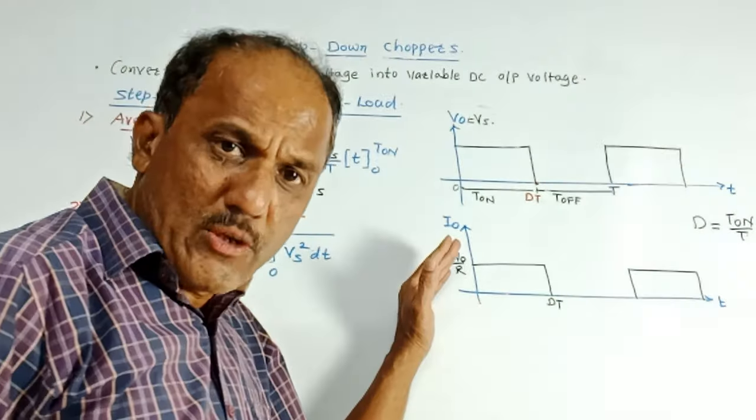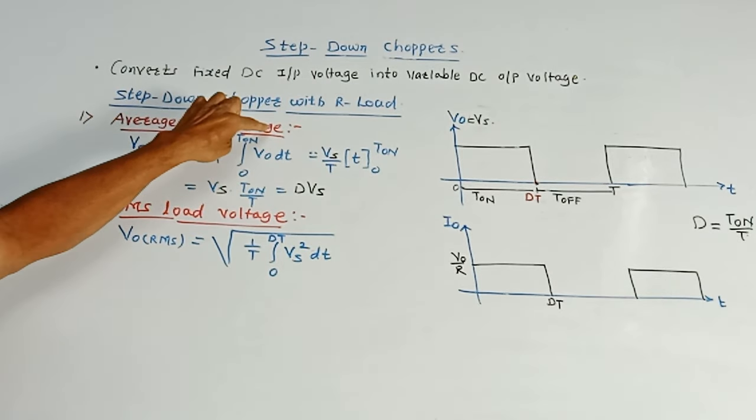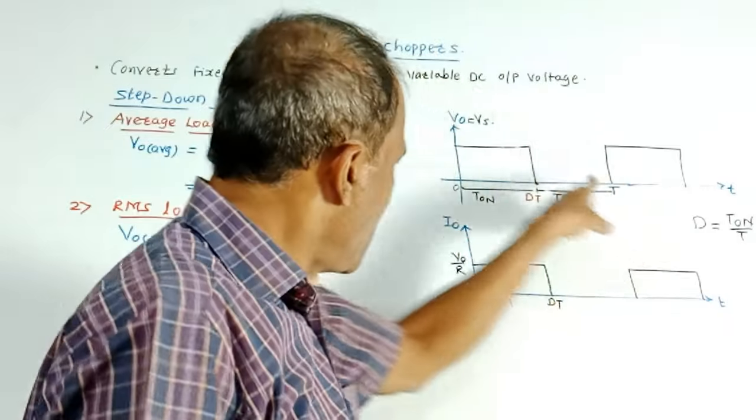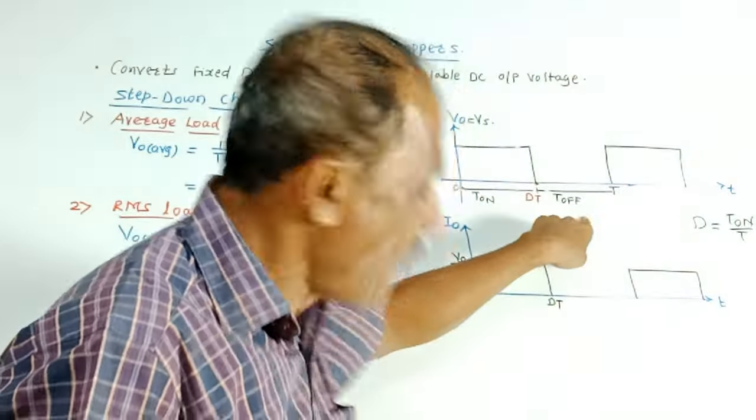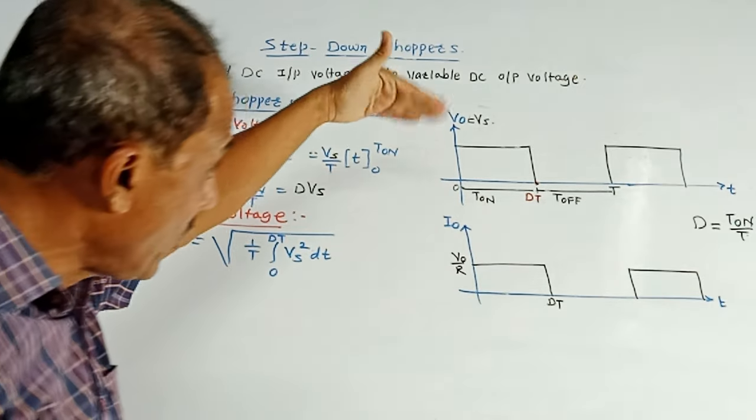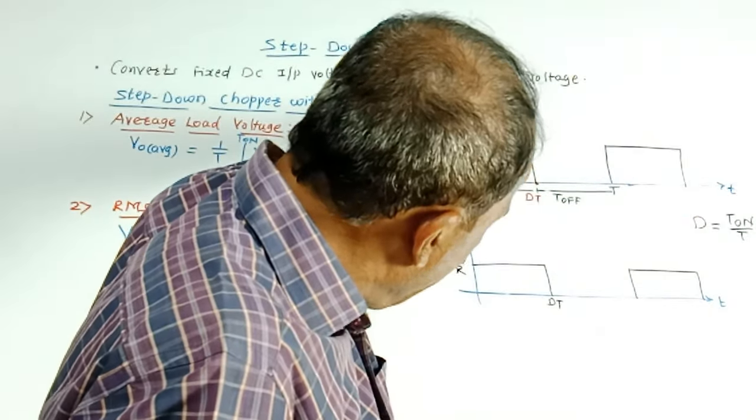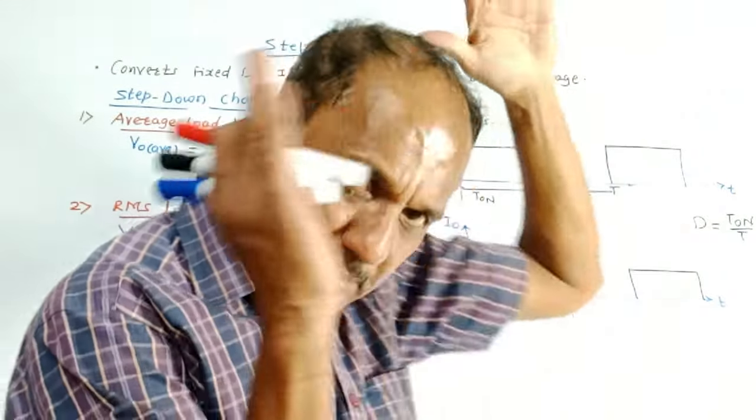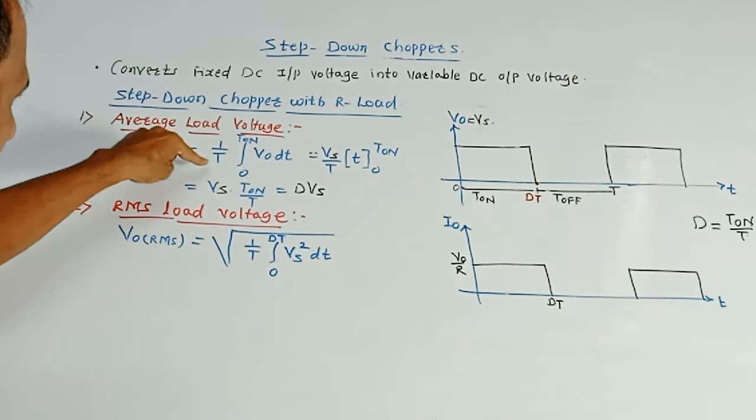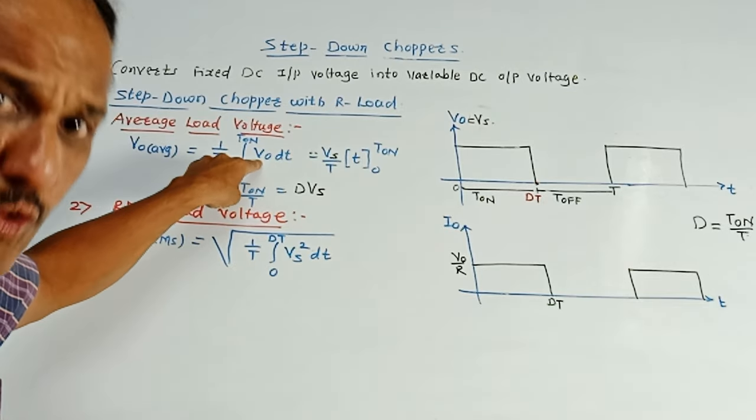Now let us discuss analysis of this circuit, that is step down chopper with R load. First is calculation of average load voltage. This is the average value. We know that total time period is T which is combination of T on and T off. So it is 1 by T integration 0 to T on. Why 0 to T on? Because during time period 0 to T up to T on only. That means 0 to DT. That means for time period T on, the voltage is available at the output that we already discussed. So formula is 1 by T integration 0 to T on V0 DT. V0 is the output voltage.